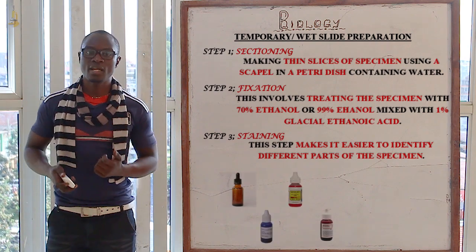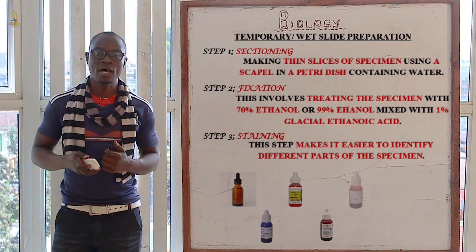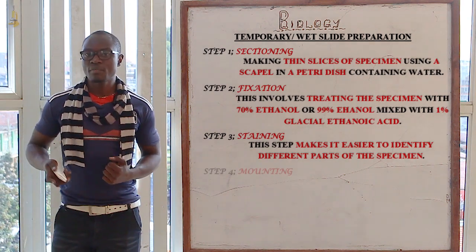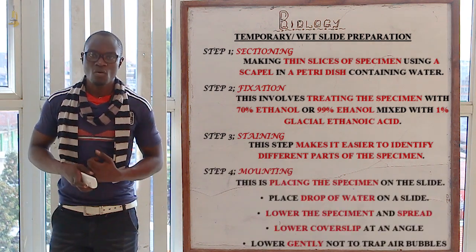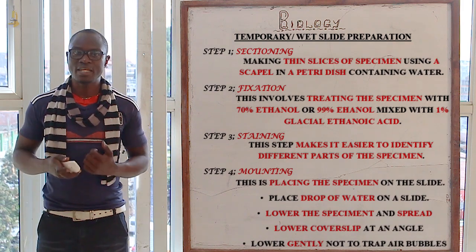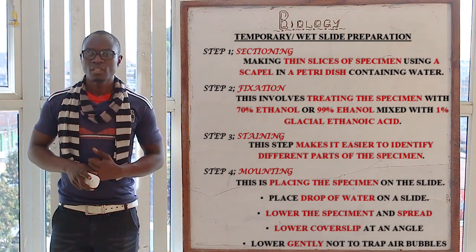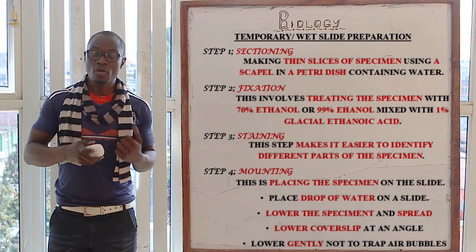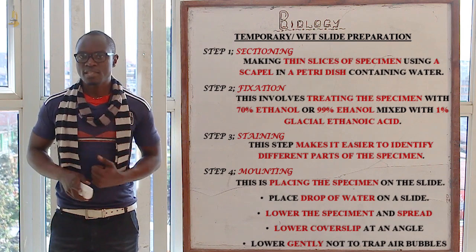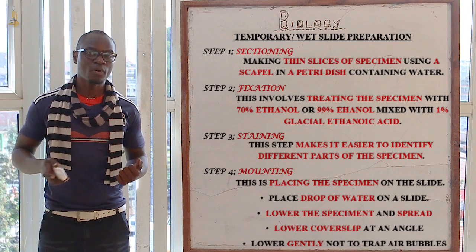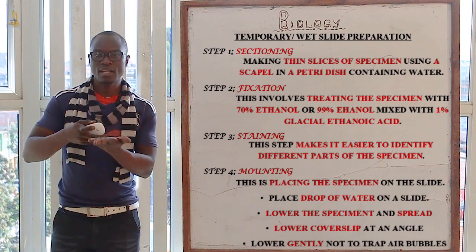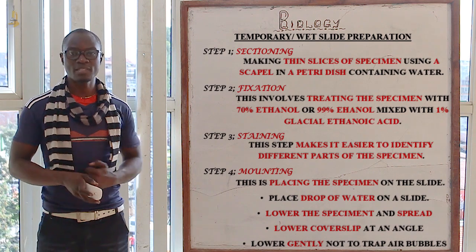The common stains which are used include iodine, methyl blue, methyl red, neutral red, and eosin, among others. Lastly, the last step is mounting, whereby this is placing the specimen gently on the slide to be observed on the microscope. The first step in mounting is to place a drop of water on the slide.